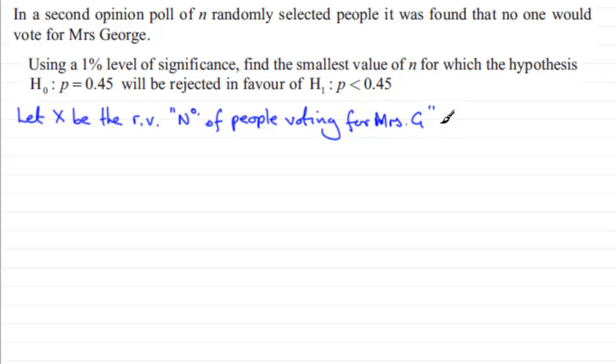Our random variable X is going to be distributed as a binomial distribution. The two parameters will be N, the number of trials which is what we've got to find, and P, the probability of success. We know it's a binomial model because there's two outcomes, there's a finite number of trials, and I'm assuming that the probabilities remain constant and independent.